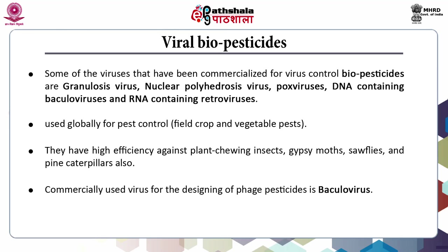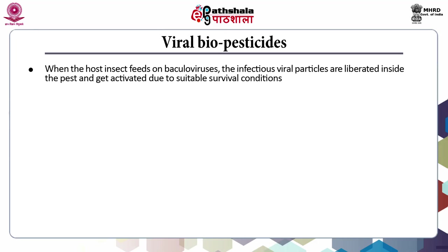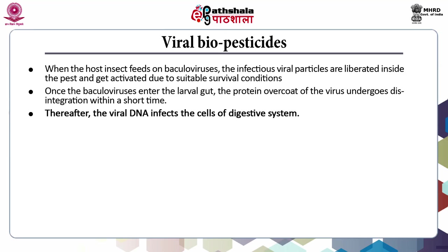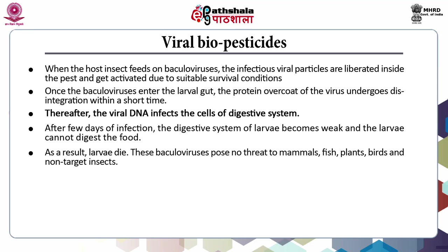The commercially used virus for designing phage pesticides is Baculovirus. The nuclei of host insect cells are the place where baculoviruses develop. When the host insect feeds on baculoviruses, the infectious viral particles are liberated inside the pest and get activated due to suitable survival conditions. Once the baculoviruses enter the larval gut, the protein overcoat of the virus undergoes disintegration within a short period of time. Thereafter, the viral DNA infects the cells of the digestive system. After a few days of infection, the digestive system of larvae becomes weak, and the larvae cannot digest food and ultimately dies.